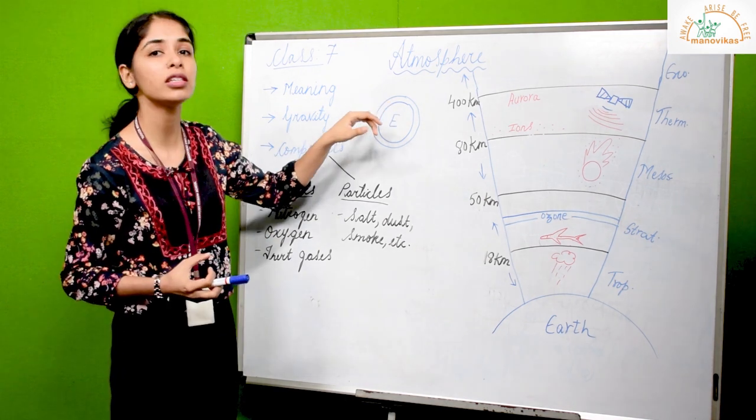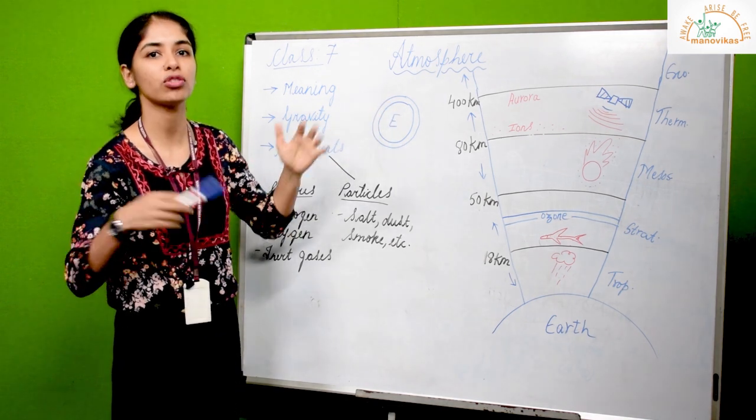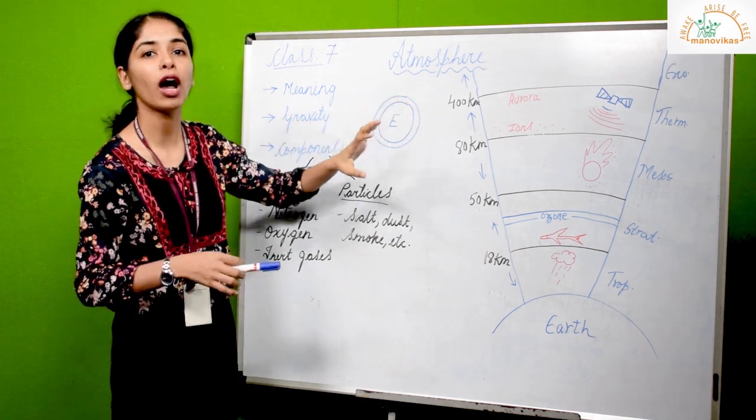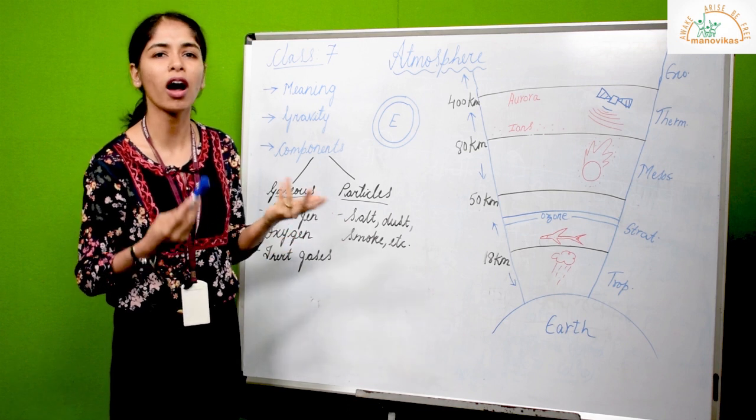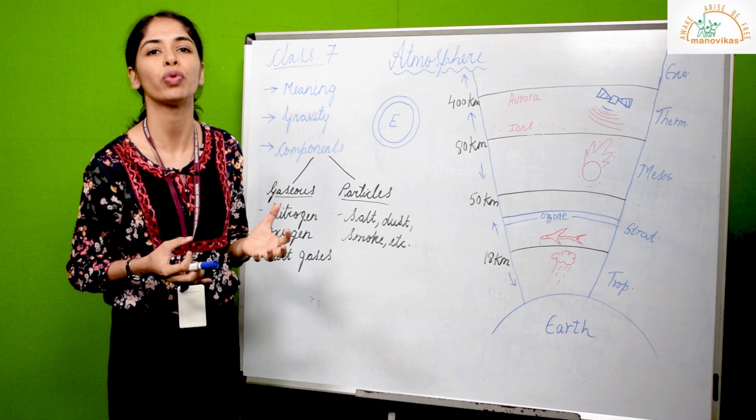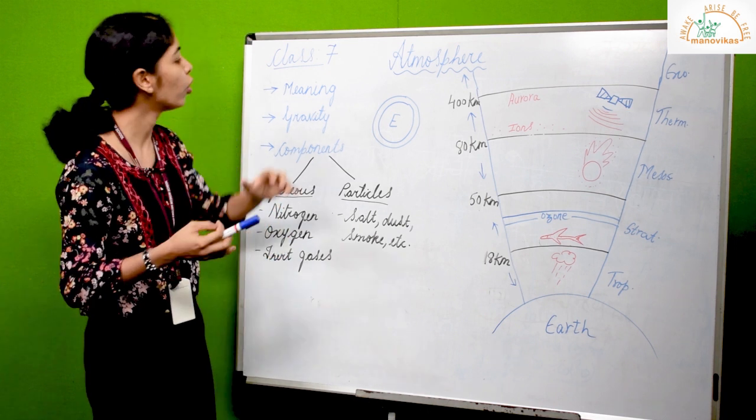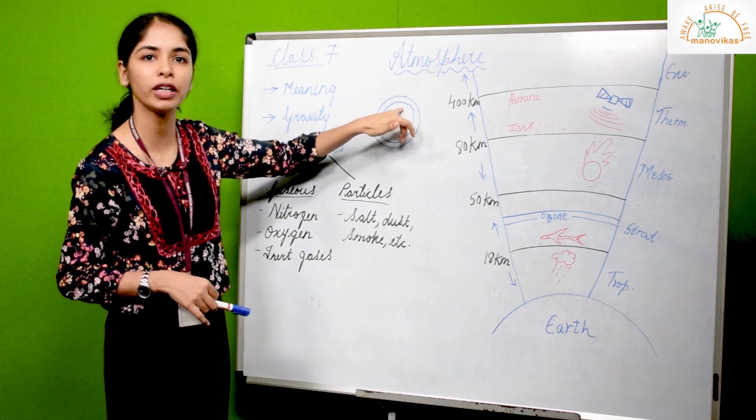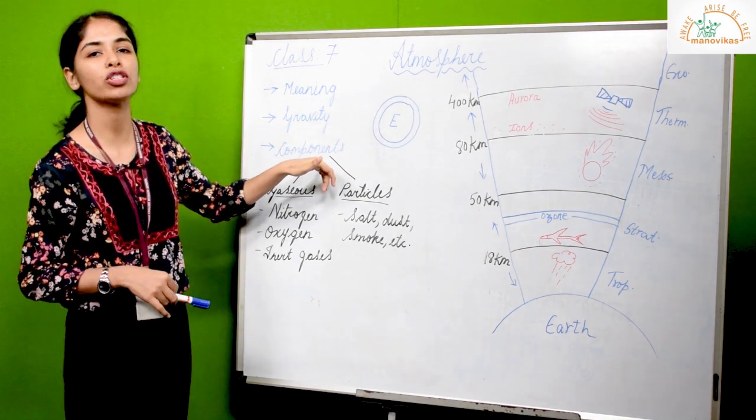Now what keeps this atmosphere or this thin layer intact around the earth? Here the earth's gravity comes into picture. The earth's gravity is so strong and tremendous that it doesn't allow these atmospheric gases to escape into space but rather holds it intact around it. Unlike earth's moon, it hardly has any atmosphere because the gravity of the moon is very weak.